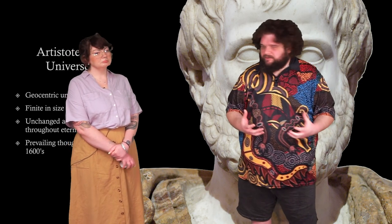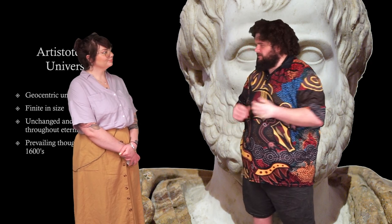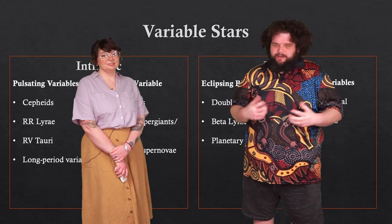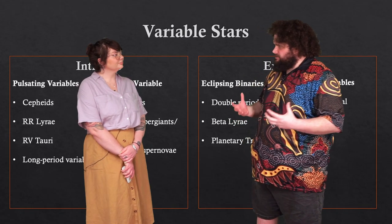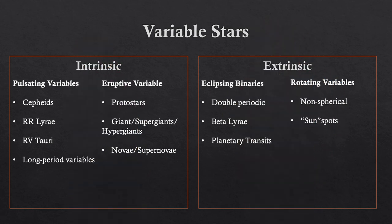We're going to look at some of the variability that we now know about in Western science. When it comes to variable stars, there are two main classifications: intrinsic variable stars, where the variability is actually a property of something that happens within the star, and extrinsic variable stars, where the variability happens by a mechanism that's external to the star.